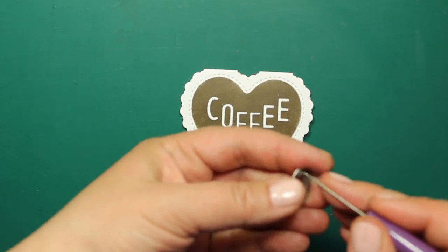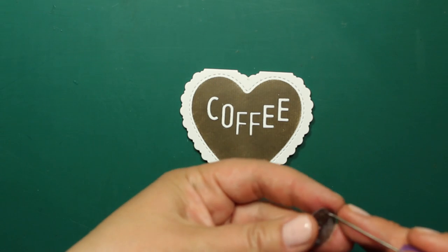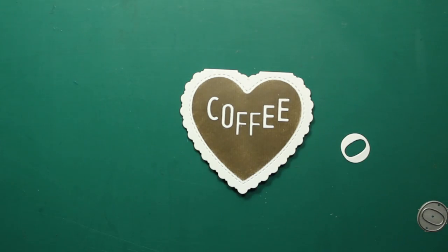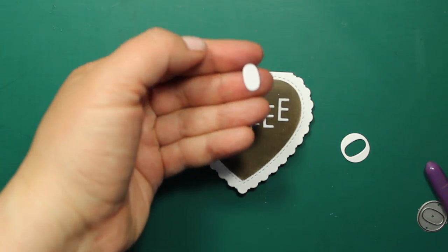This is the letter O from another alphabet set. But I will only need a negative piece from the middle. I want to use it to create a coffee bean.